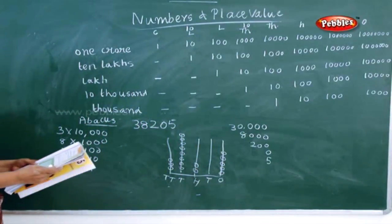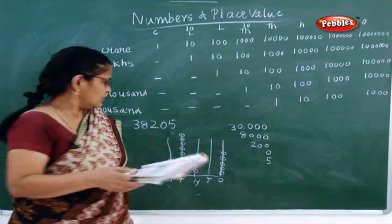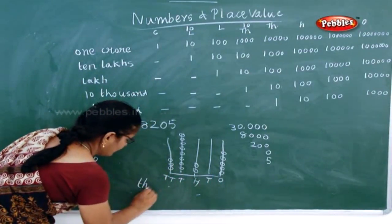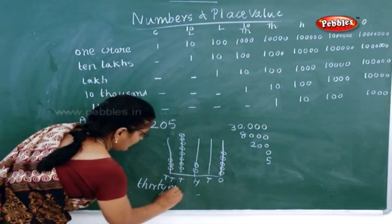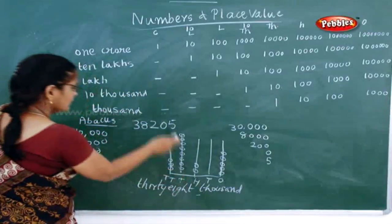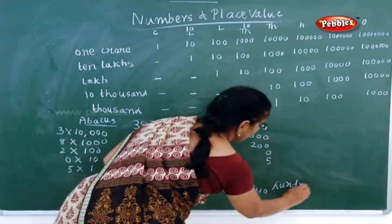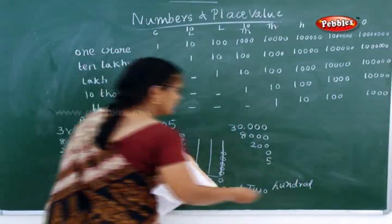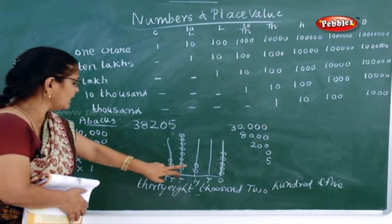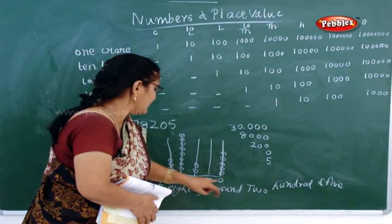Now next one — one more sum. How will you write it in words? This 38,205. You have to write like this: 38,000 — what is it? Two hundred and five. How will you write? 38,205 — that is 38,000 means 30,000 plus 8,000. So: 38,205.